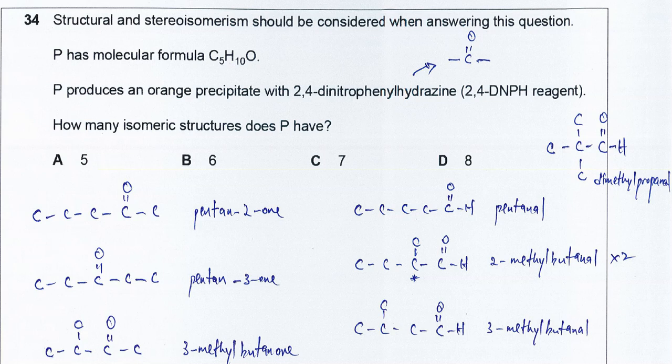P has molecular formula C₅H₁₀O and produces an orange precipitate with 2,4-DNPH reagent, showing that it has a carbonyl group. We need to list out all the possible isomers which have the carbonyl group.